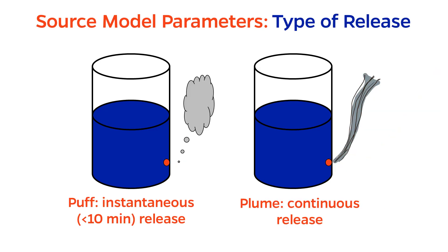How about the type of release, meaning the time scale? If the release is instantaneous — and here we'll stretch the meaning of that word to mean up to 10 minutes — the resulting cloud is called a puff. In contrast, if the release is continuous, the cloud is called a plume.